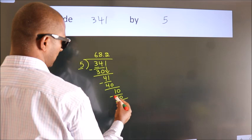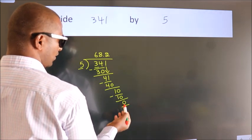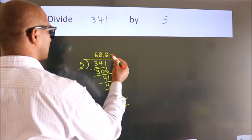Now we subtract, we get 0. We got remainder 0. So this is our quotient.